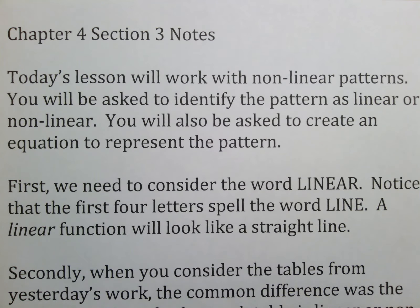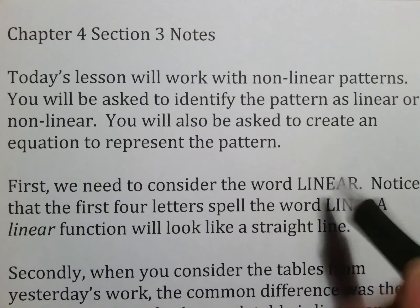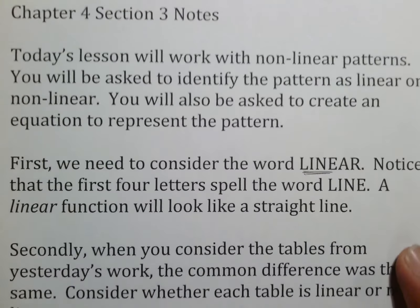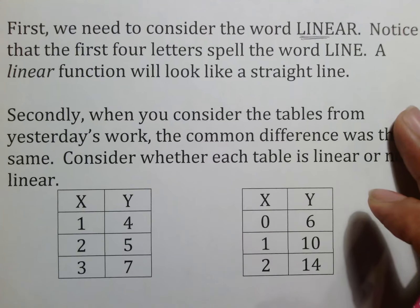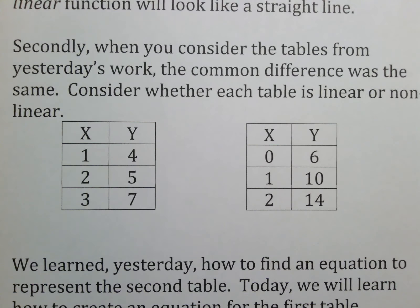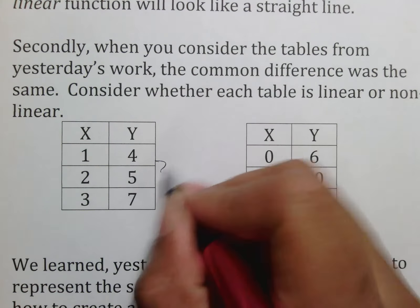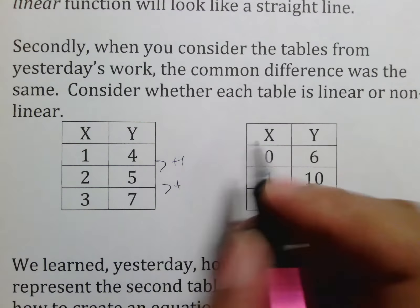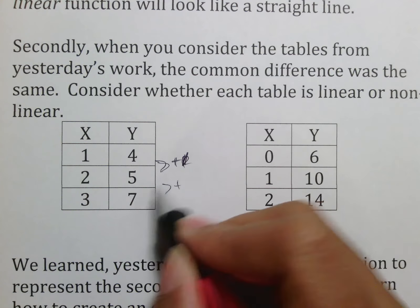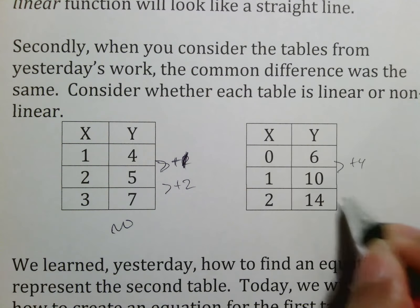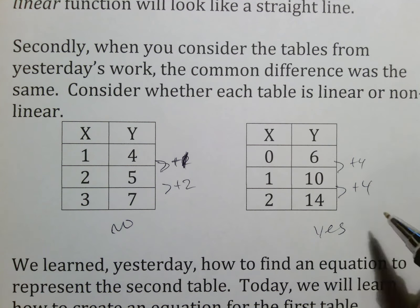First, consider the word 'linear.' The first four letters spell L-I-N-E, which means linear is like a line. A linear function looks like a straight line, so if something is not a straight line, it's not linear. When you consider tables, the common difference must be the same throughout. For example, if one column adds one and another adds two, that's not linear. If it consistently adds four, then yes, that would be linear.